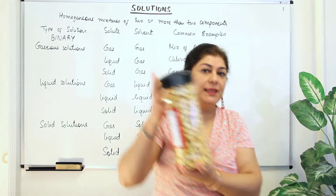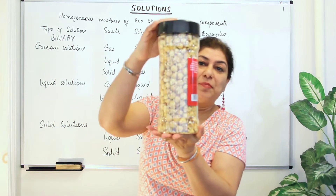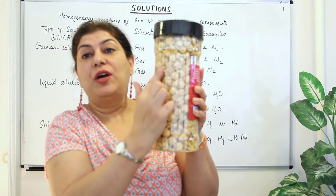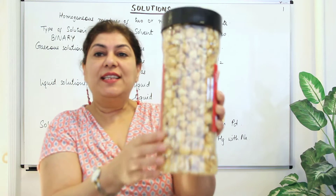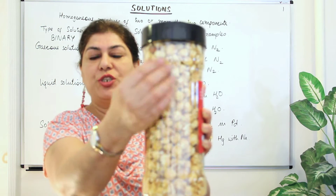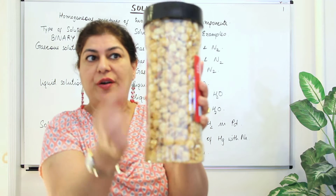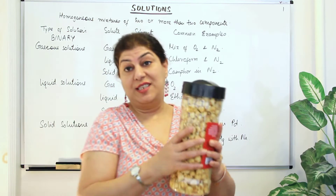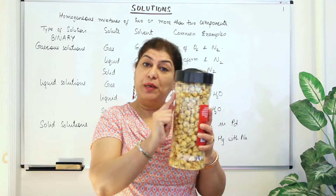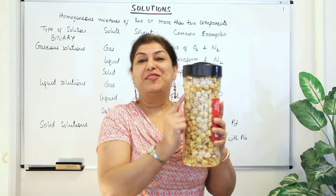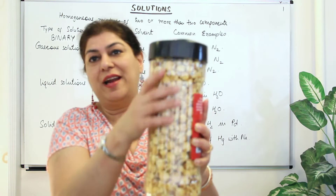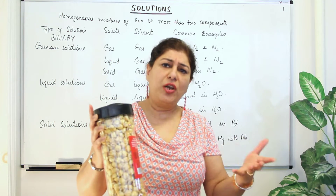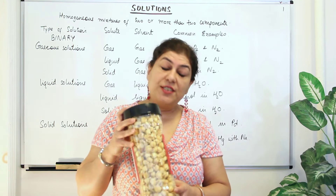For example, consider a jar with caramel popcorns and air inside it. You can see the caramel popcorns distributed throughout the jar, and the spaces show that air is present. Where the caramel popcorn is present, air is absent, and where you see the air spaces, the popcorn is absent. So you can see both components separately — that is a heterogeneous mixture. Mixtures of solids are usually heterogeneous mixtures.